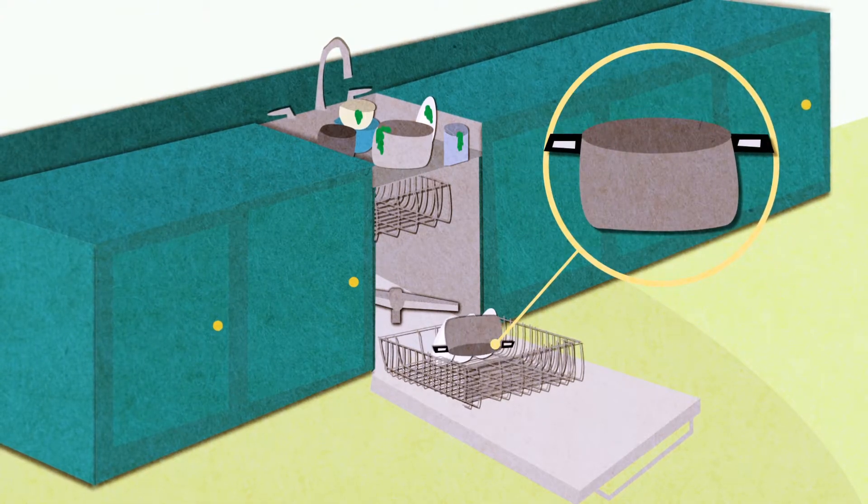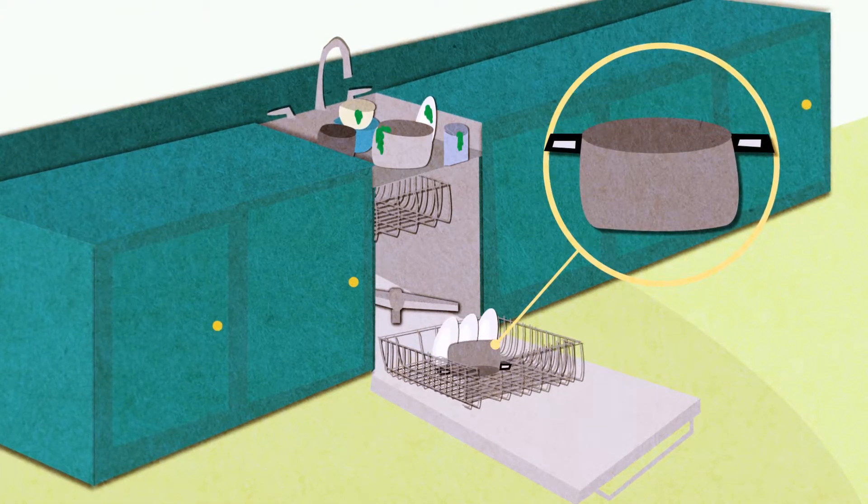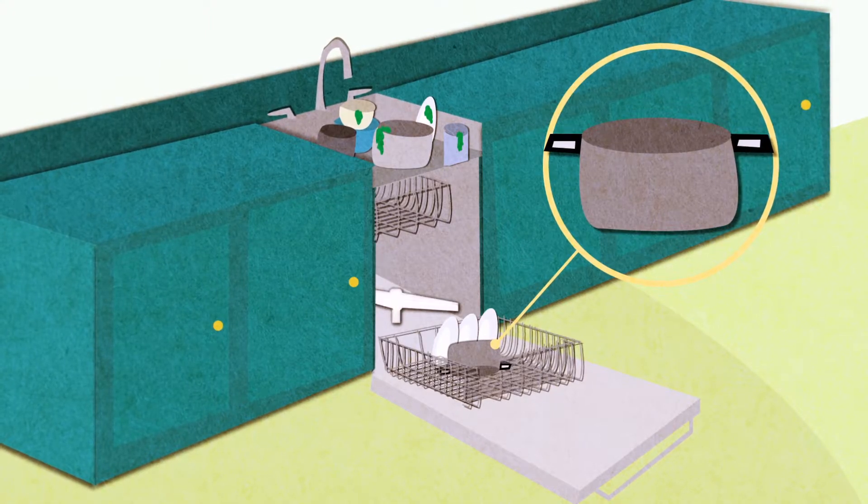Pans go on the bottom too. Just make sure when you load, all soiled surfaces are facing down with no obstructions between the mess and the sprayer that cleans the mess.